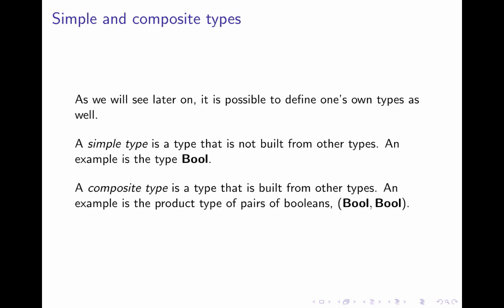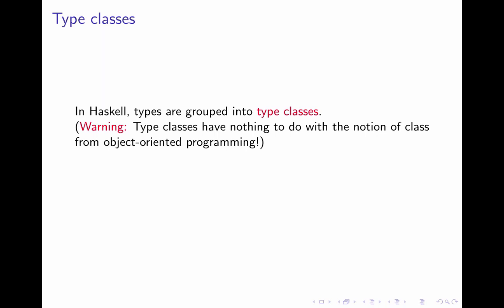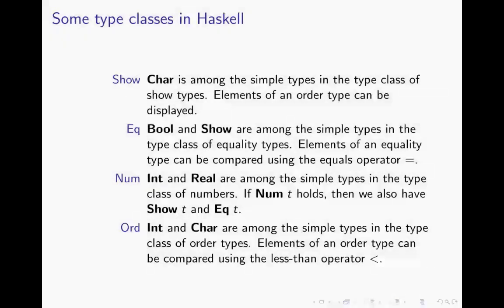But more about that later on. One thing that Haskell does is that it groups types into type classes. Please, please, please. This has nothing to do with the notion of class from object oriented programming. I mean it's just the word that's the same. Haskell groups types into type classes. Here are some of the type classes in Haskell. There are many more.